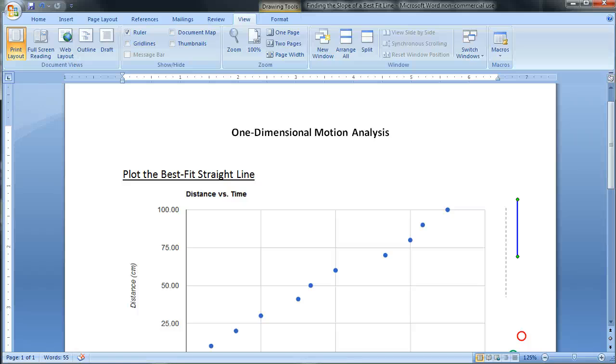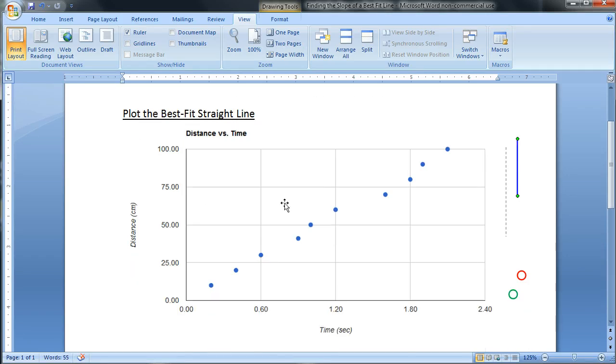Hi there again. In this screencast, I'm going to show you how to find the slope of a best fit line. Here we have our data already plotted. This is our distance and time data for our little battery powered buggy. And here are our data points.